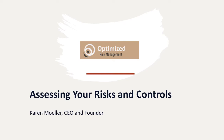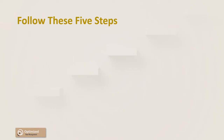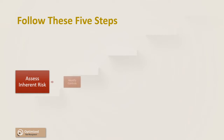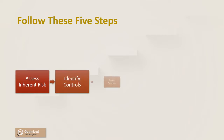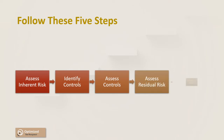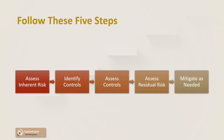Assessing your risk means understanding how risky your risks are and whether they are at a level that you are comfortable with. In this video, I will describe five steps that will help you conduct this process in a smart manner. They include assessing your inherent risk, identifying your controls, assessing your controls, assessing your residual risk, and then taking risk mitigation steps if needed. Follow these steps and you can be confident that you will know the state of your risk.